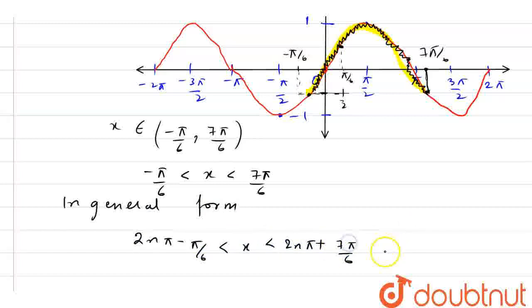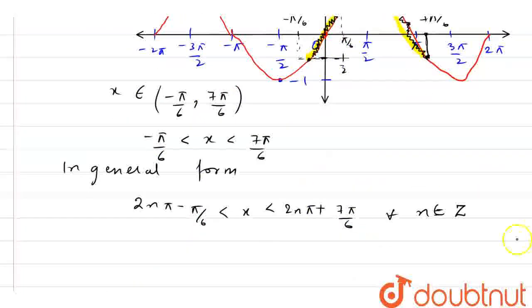Where for all n belongs to integers. For all n belongs to integers. And this is my final answer. This is the domain. So this is my final answer. Thank you.